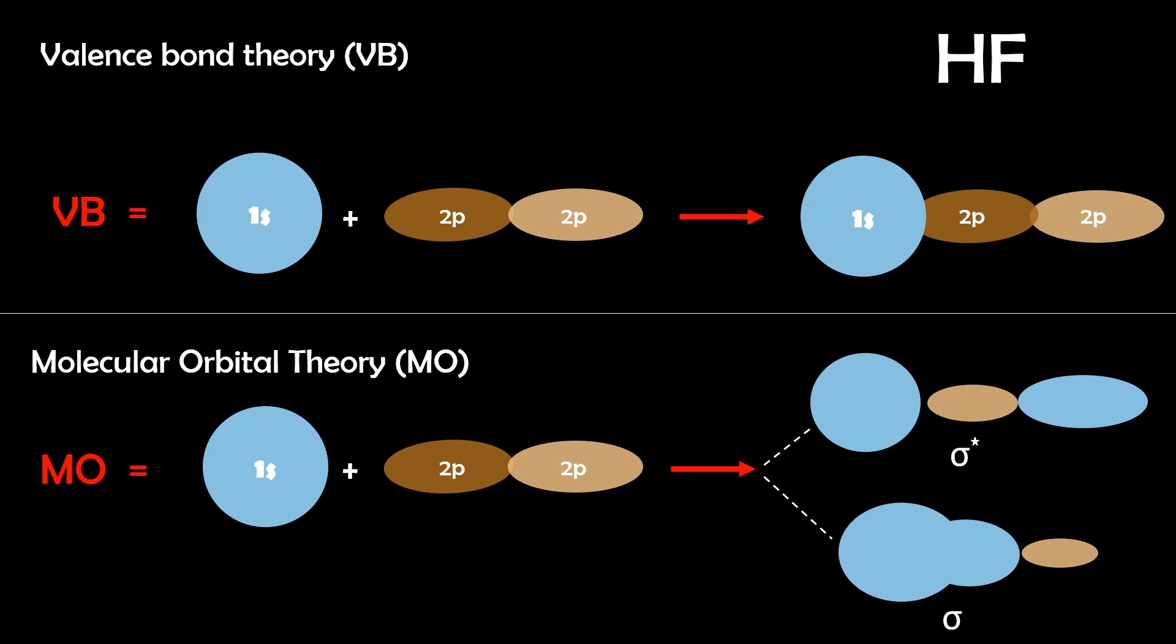Valence bond theory views molecules as formed from interacting atoms that retain their original characteristics whereas molecular orbital theory explains that electrons occupy molecular orbitals formed by the overlap of atomic orbitals. Both these theories are crucial but one might be more useful or suitable than another depending on the specific situation.